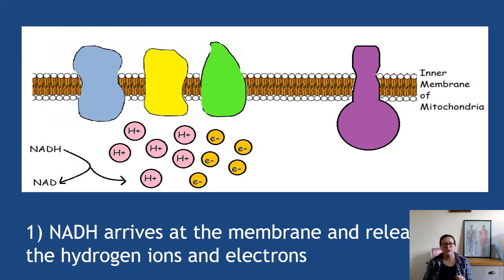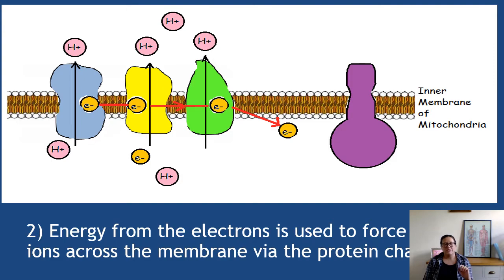So that is step one, they arrive at the membrane. In stage two this looks bad but sort of bear with me. The idea is the electrons use their energy and give it to the proteins, the membrane proteins, and they use that to force the hydrogen ions across the membrane via the protein channels. Effectively it's like a type of active transport, it's not really active transport but it's like a type of active transport.